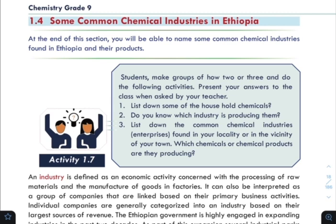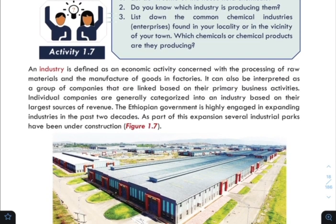Section 1.4: Some Common Chemical Industries in Ethiopia. The chemical industry is defined as an economic activity concerned with the processing of raw materials and the manufacture of goods in factories. It also refers to economic activity in the economy.